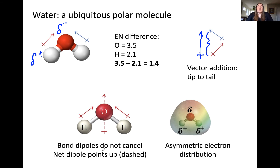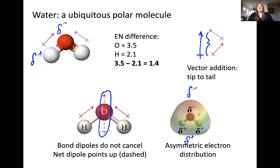Drawing this molecular dipole on the water molecule, you'll notice it goes right through the middle of the molecule, piercing through the oxygen in this tetrahedral electron geometry and bent molecular geometry. Because the bond dipoles don't cancel, we have a net molecular dipole. This is also manifested in the electrostatic potential map, which shows the asymmetric electron distribution — more electron density toward the partially negative oxygen end and less electron density toward the partially positive hydrogen end.